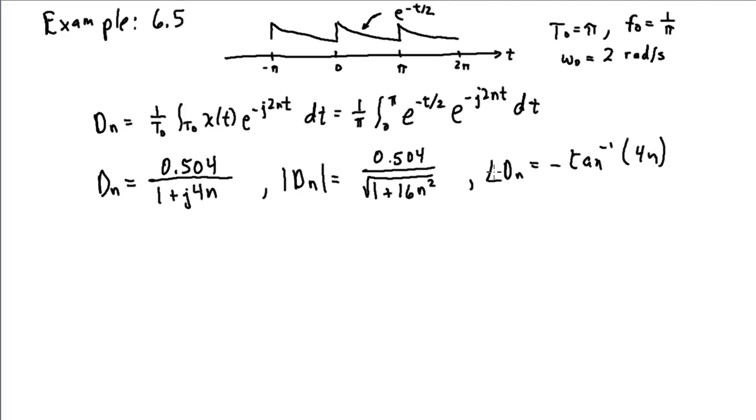And in order to sketch these, at least by hand, I want to make a short table of the first few amplitude and phase values for different values of n. With n equal to 0, evaluating this, I get 0.504 for dn. So that's its magnitude and the corresponding phase n equal to 0.